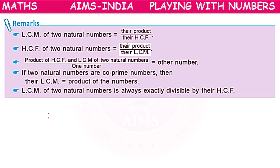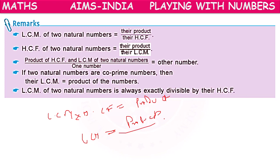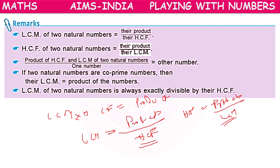We have learned that LCM × HCF = product of the numbers. If you want to find only LCM, then LCM = product ÷ HCF. Or, if you want to find HCF, then HCF = product ÷ LCM. Also, if you want to find one of the numbers, then: (product of HCF and LCM) ÷ one number = the other number.